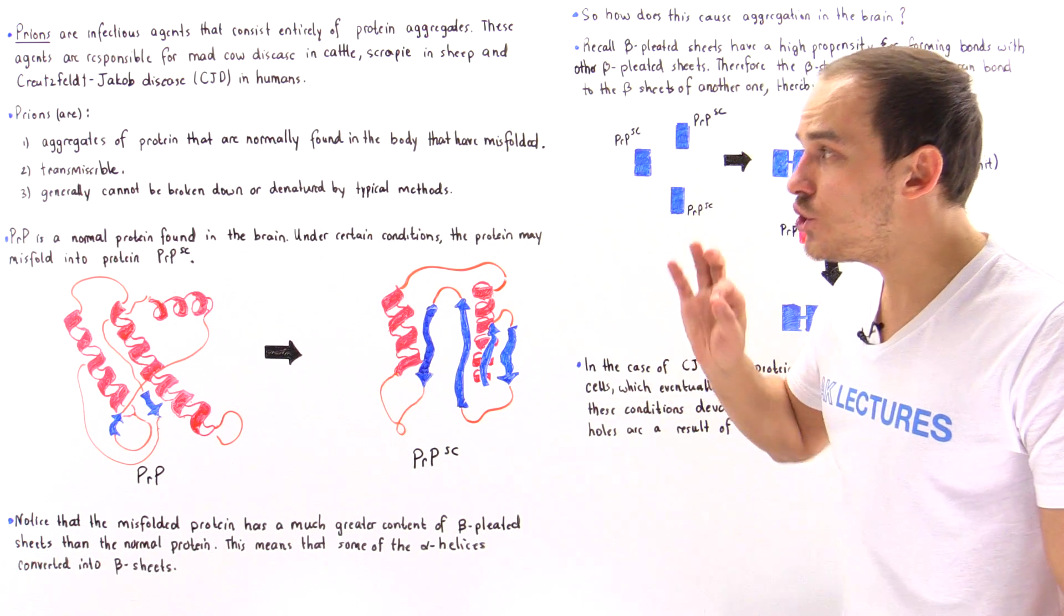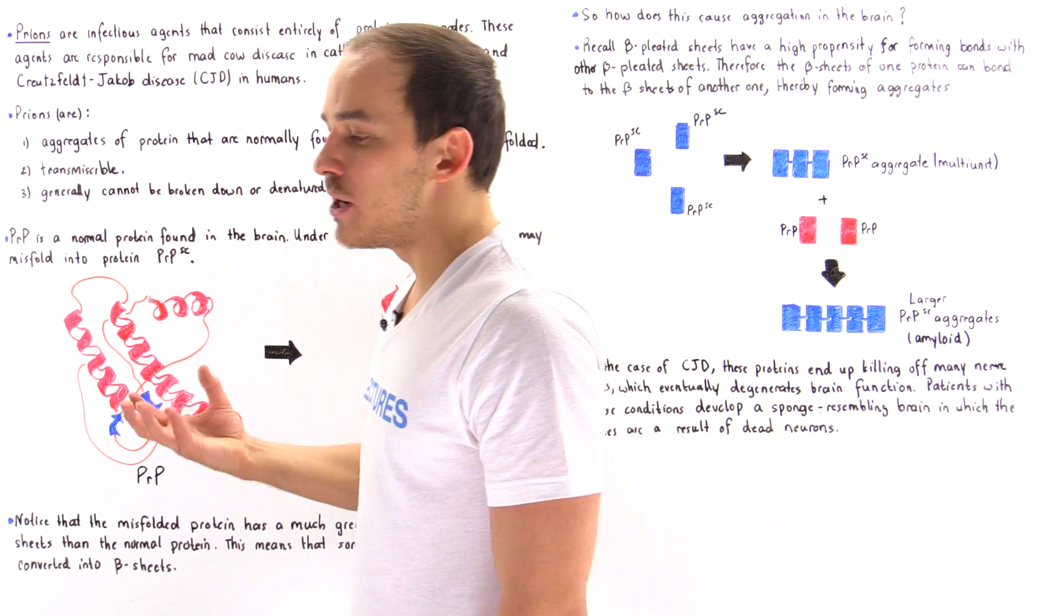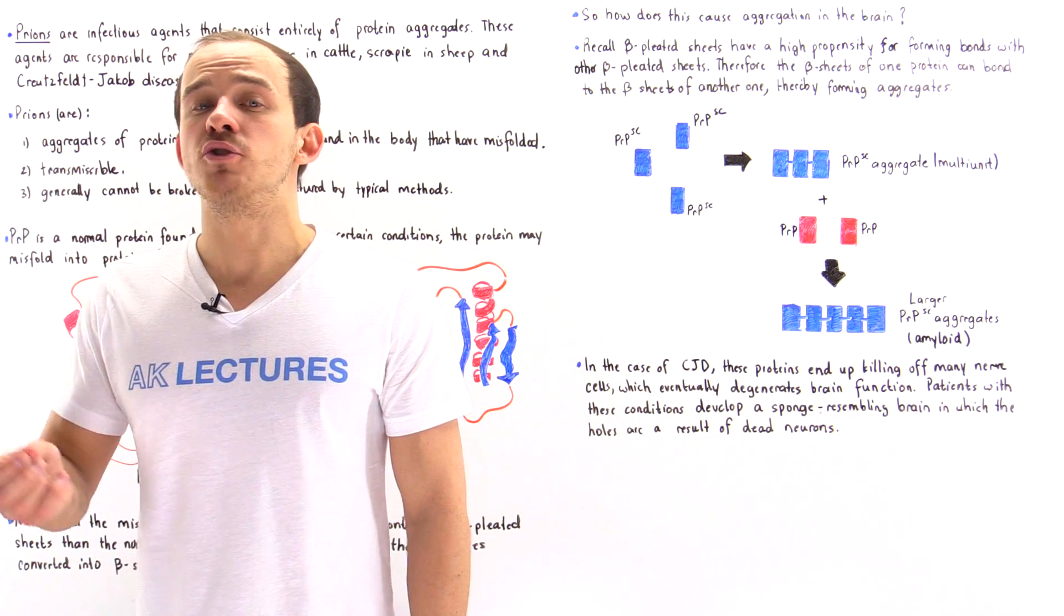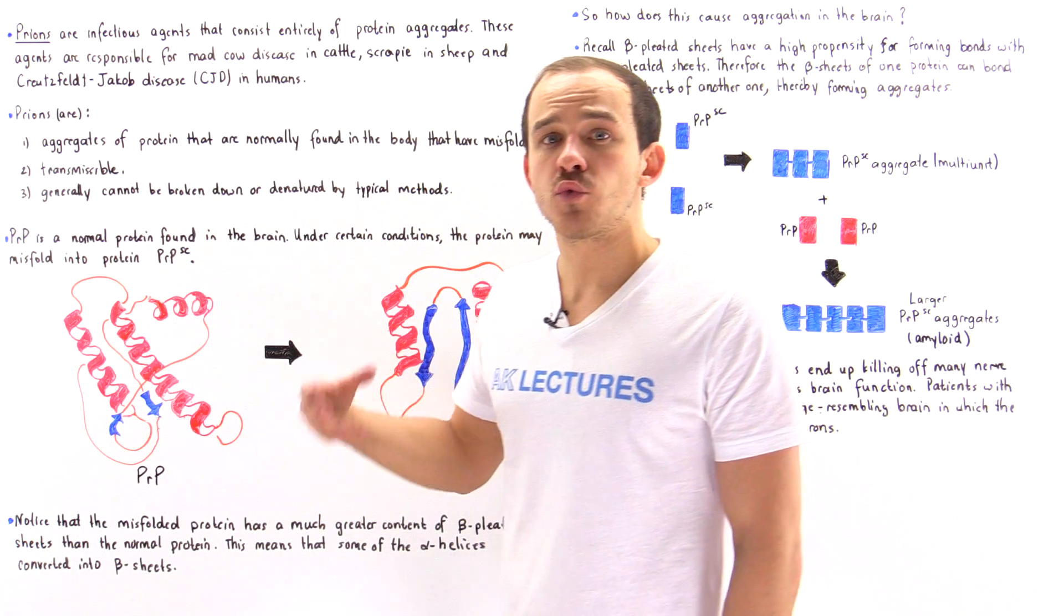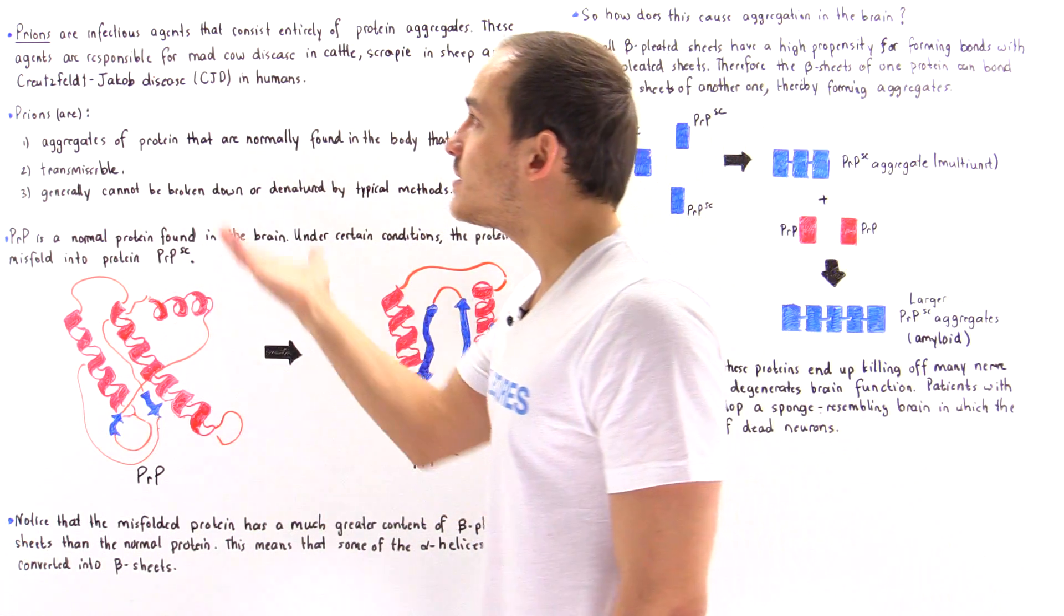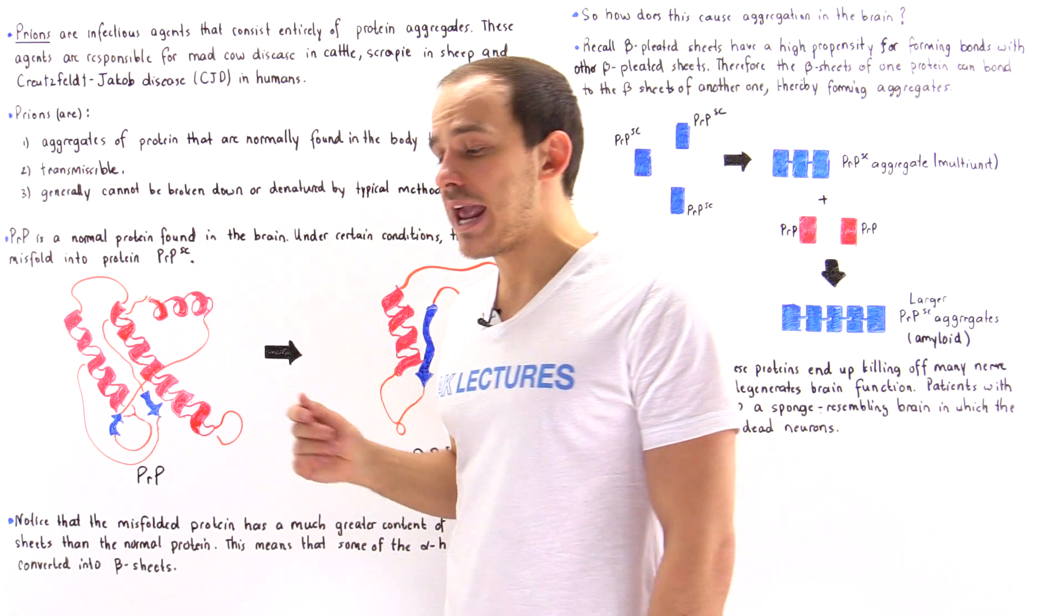We see that usually the misfolding of a protein doesn't actually do much because our body is capable of denaturing and breaking down that misfolded protein or folding it correctly into that correct shape. But sometimes we get something called a prion, and these are very dangerous infectious agents.